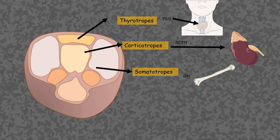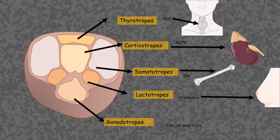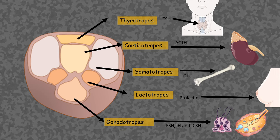Somatotrope cells secrete growth hormone, which acts upon long bones and helps in bone development and growth. Lactotropes secrete prolactin, which helps in lactation and breast development. Gonadotropes secrete FSH, LH, or ICSH — follicle stimulating hormone, luteinizing hormone, or interstitial cell stimulating hormone — all of which can act on the gonads. For example, FSH works on follicles in the ovary, whereas ICSH works on the seminiferous tubules and helps in sperm production and development.